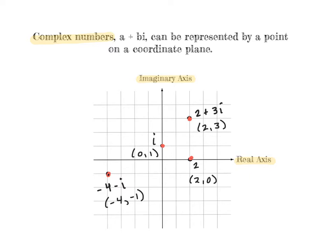For example, if you have something like 2 plus 3i, you can write it as the coordinate (2, 3). Since the real number is 2 and the imaginary number is 3, that's where it's plotted. Or negative 4 minus i would just be at the coordinate (-4, -1), because the real number is negative 4 and the imaginary number is negative 1. You can represent something like just the number 2 at the coordinate (2, 0), because there are no imaginary parts. And if you have just an imaginary number, it would be represented by the coordinate (0, 1) for just i.